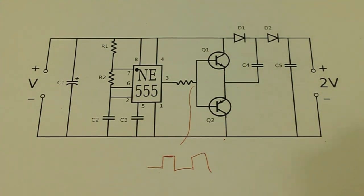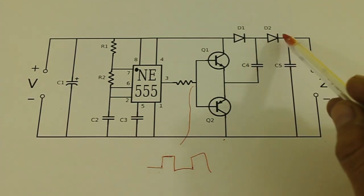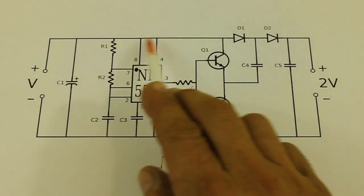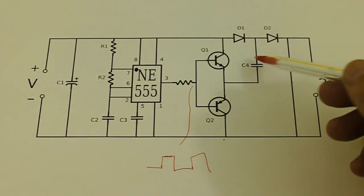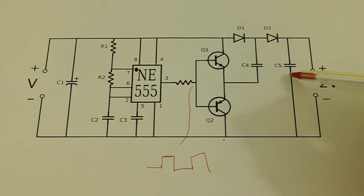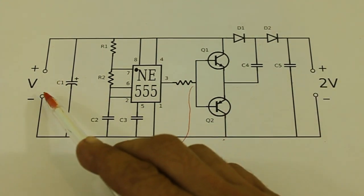But as you can see, these two capacitors are in series so this capacitor charges with the voltage of the source plus the voltage of C4. So here we will have double the voltage that we apply at the input.